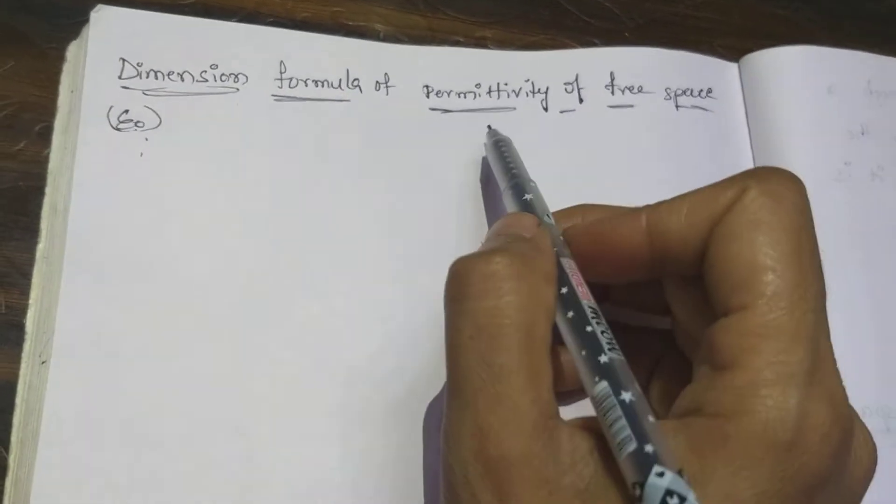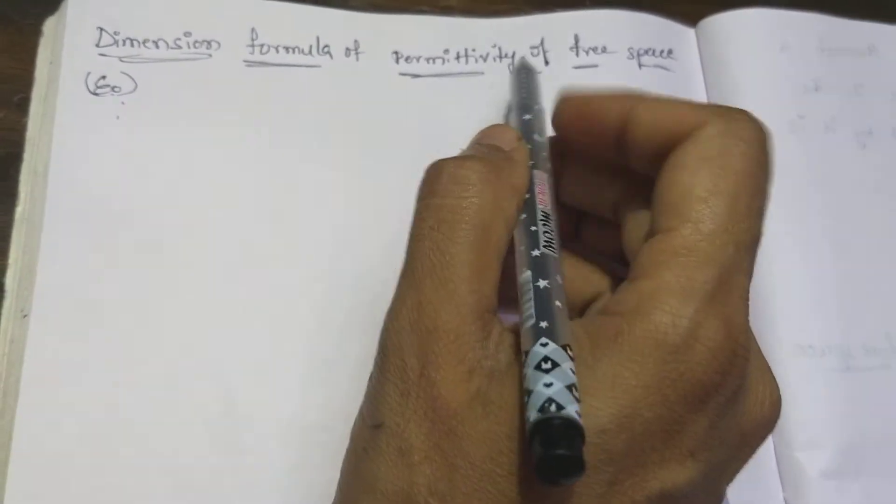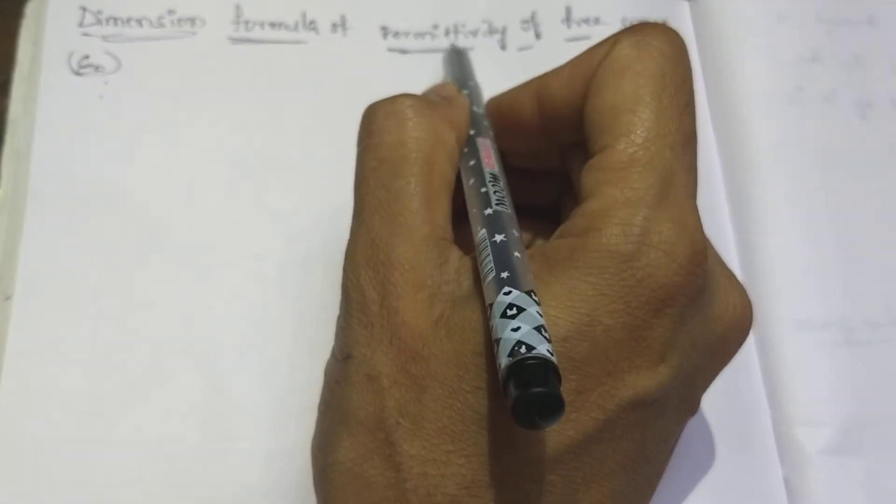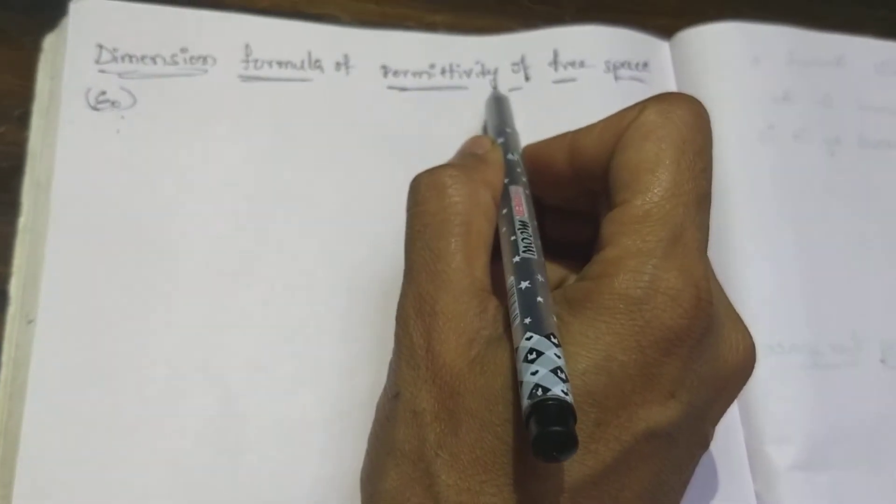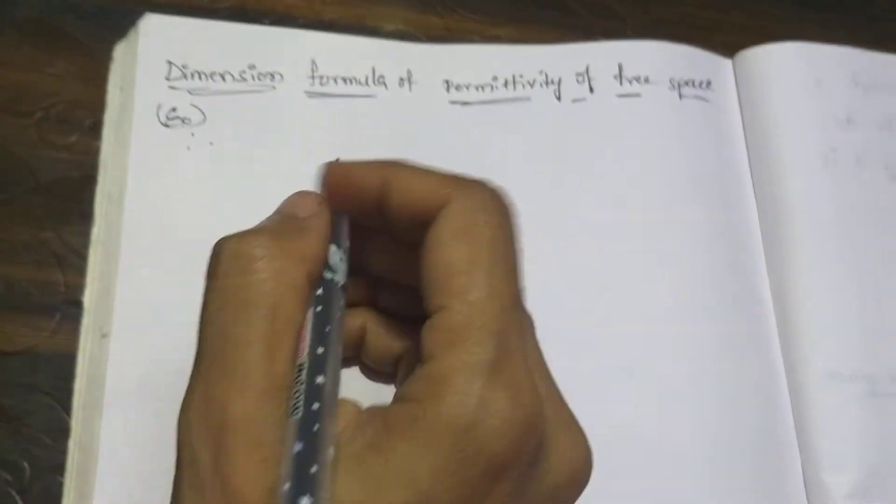What is the meaning of permittivity of free space? The name itself is indicating permitting - means the capability of allowing electric field lines into the vacuum or free space. This is epsilon naught.